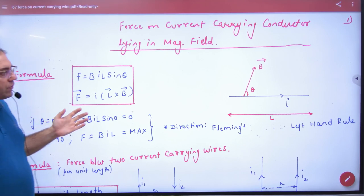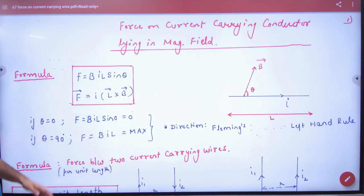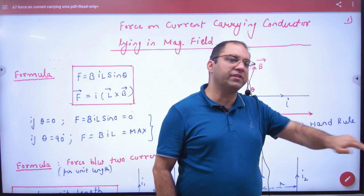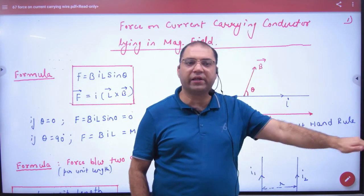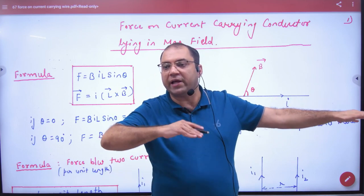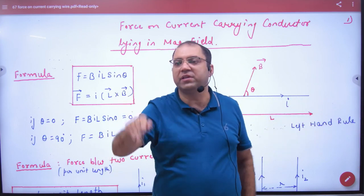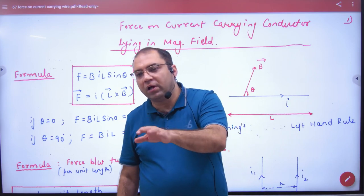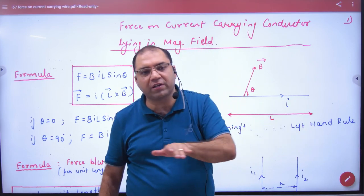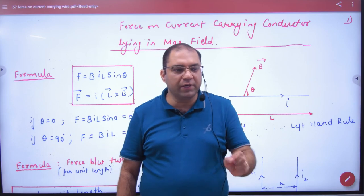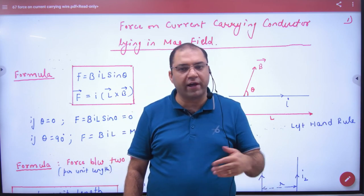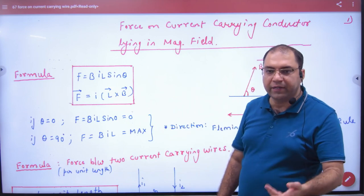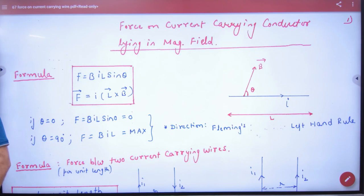So if B and L angle is 0, means if a wire and magnetic field are in the same direction, current and length in one direction and magnetic field in the same direction, then no force is experienced. Why? Angle theta is 0. Otherwise, think yourself: if magnetic field and charged particle move in the same direction, then no force is experienced because BQV sin 0 is 0. So if angle is 90, BIL sin 90, then force is maximum. So the first rule is clear.